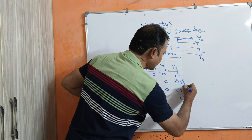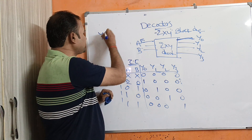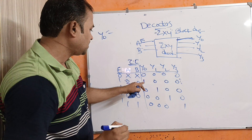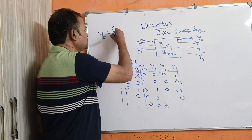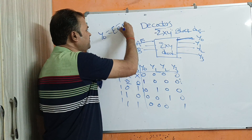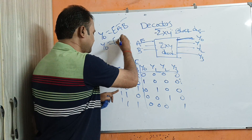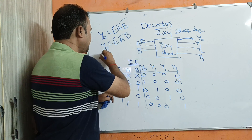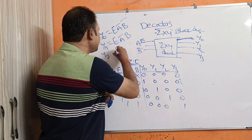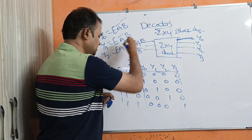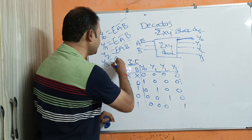Now we can write the Boolean expressions. Y0 = E · Ā · B̄, because E=1, A=0, B=0. Y1 = E · Ā · B. Y2 = E · A · B̄. Y3 = E · A · B.